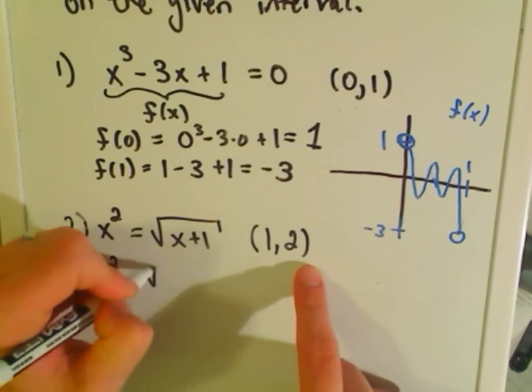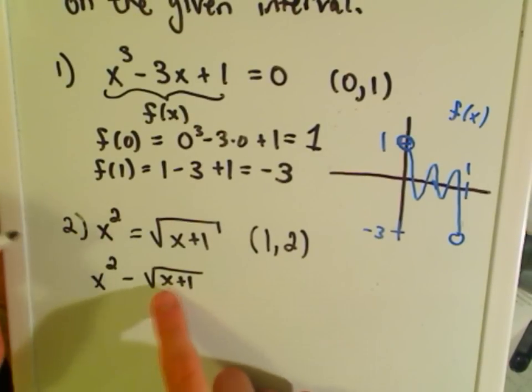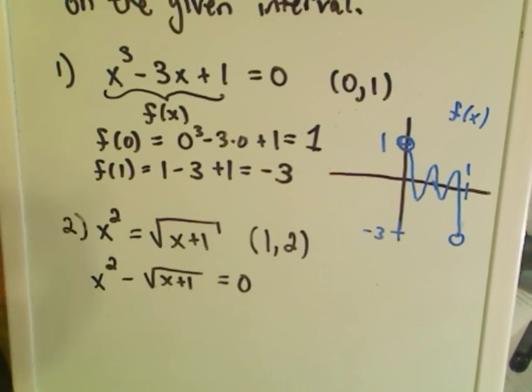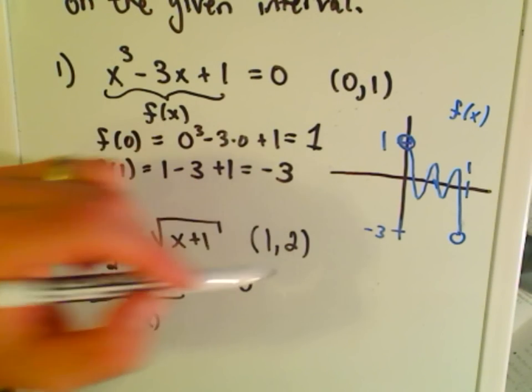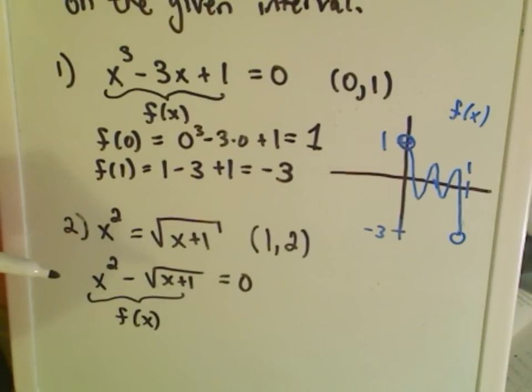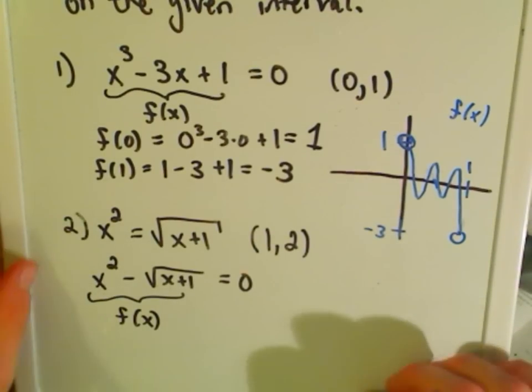So the same thing on this next one. We're trying to show there's a solution to this equation on the interval one to two. Well, what we can do is simply subtract the radical, the square root of x plus one over to the left side. And now it's the same idea. Finding a solution to this original equation is going to be equivalent to finding a root of this second equation. Notice as well that x squared is a polynomial, so it's continuous. Square root of x plus one is just a root function composed with a linear function. That's going to be continuous on its domain. One and two falls inside of there. If you subtract two continuous functions, it's still continuous. Okay, so you really have to make sure that these functions are continuous. You have to give an argument as to why you can use the intermediate value theorem.